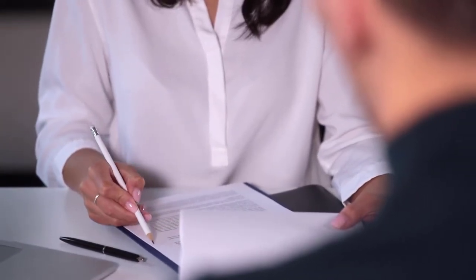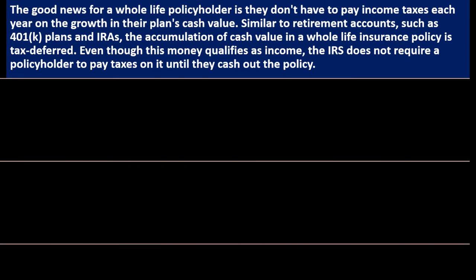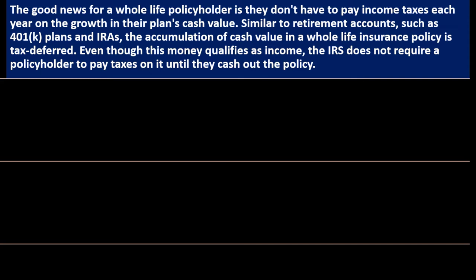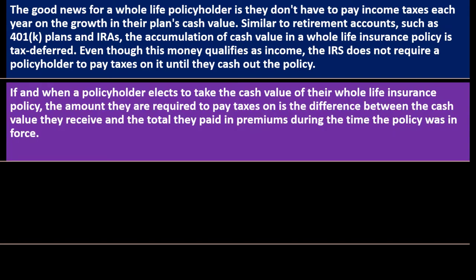If the growth were outside of the insurance and not under the umbrella of an IRA or 401(k) plan, it would be subject to taxes — you'd receive a 1099 for interest or dividend income. The good news for a whole life policyholder is they don't have to pay income taxes each year on the growth in their plan's cash value. Similar to retirement accounts such as 401(k) plans and IRAs, the accumulation of cash value in a whole life insurance policy is tax-deferred. Even though this money qualifies as income, the IRS does not require a policyholder to pay taxes on it until they cash out the policy.